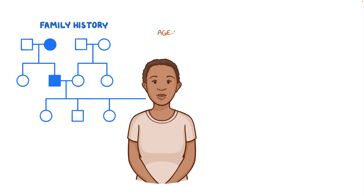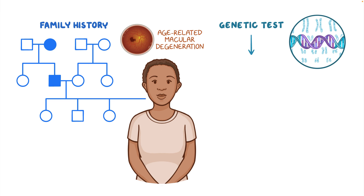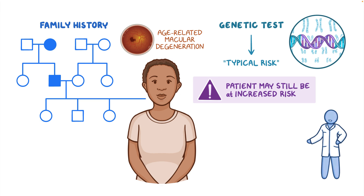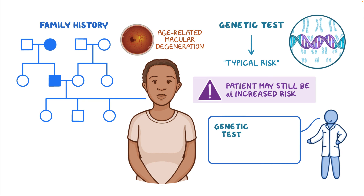For instance, a patient with a family history of age-related macular degeneration may take a genetic test that says they are at typical risk for macular degeneration. In this situation, depending on the comprehensiveness of the test, the patient may still be at increased risk. So a patient should be informed that although the genetic test indicates they may be at typical risk, because of their family history, they may still be at increased risk and need to receive regular screenings for macular degeneration.